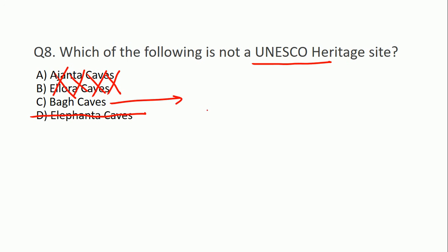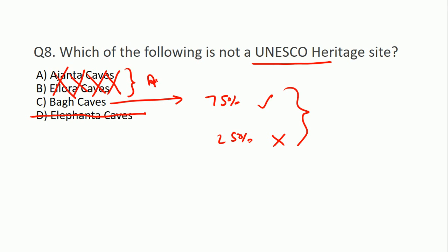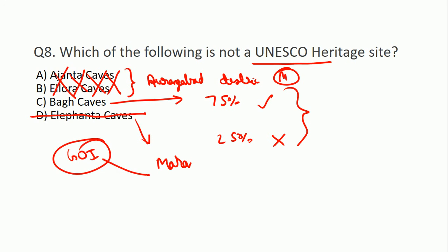8th question से related: अगर आपको answer नहीं भी आता तो eliminate करें। Elephanta Caves और Ajanta दोनों popular हैं - इन्हें eliminate करें। C या D में doubt रहेगा - जो कम popular हो उसे consider करें। इसका answer है Bagh Caves। Bagh Caves are a group of nine rock-cut monuments situated among the southern slopes of the Vindhyas in Bagh town, Dhar district, Madhya Pradesh। Ajanta और Ellora Caves औरंगाबाद district, Maharashtra में हैं। Elephanta Caves भी Maharashtra में हैं - Mumbai से ferry से एक घंटे की journey है।